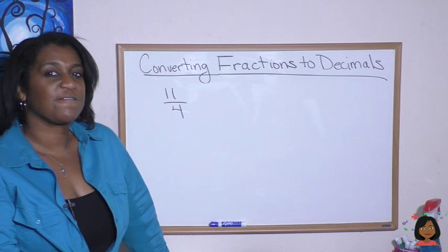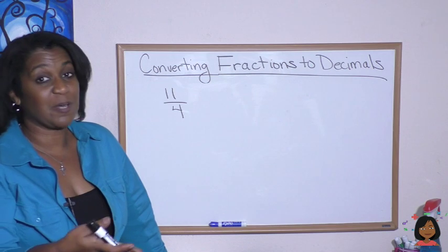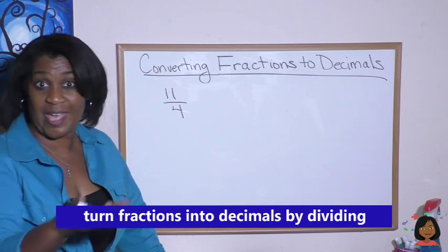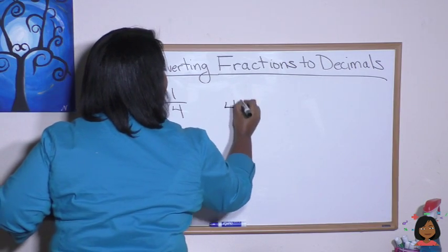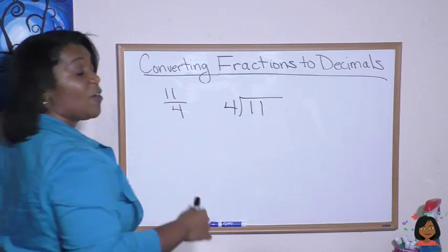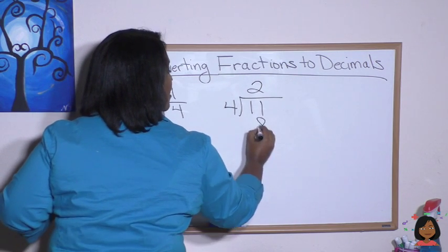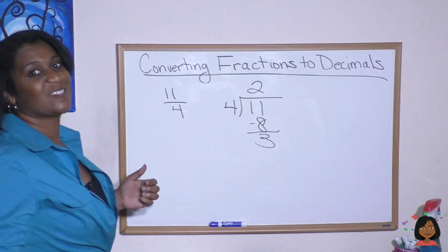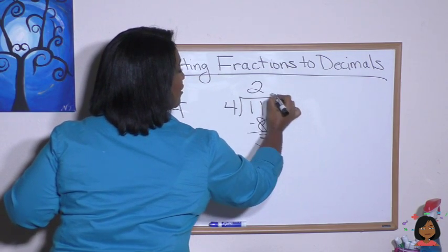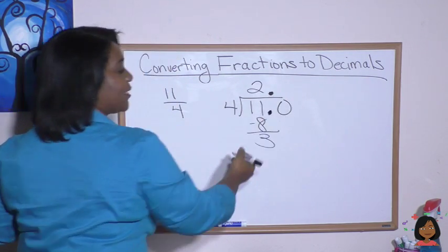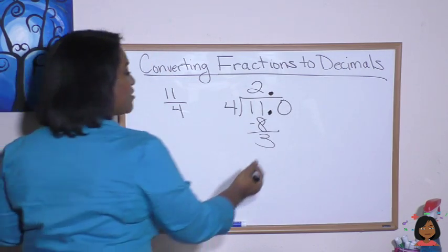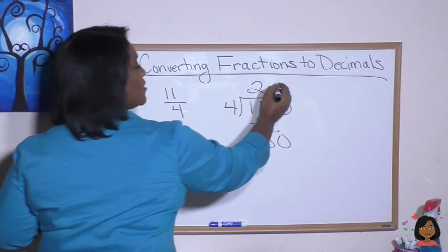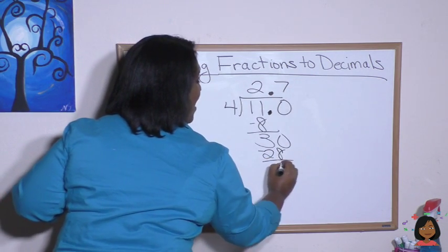So how does this work for improper fractions? We know that improper fractions are still division problems, so let's go ahead and divide. 4 goes into 11 two times. That's an 8, and we have a remainder of 3. We're not done, so we're going to add a decimal point and a zero. Let's bring our zero down. 4 goes into 30 seven times, which is 28, leaving a remainder of 2.